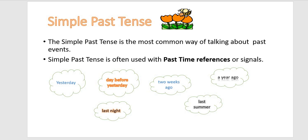So these are the ways in which we use past time references to indicate that all these events have taken place in the past.